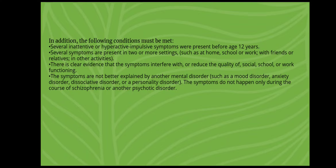In addition, the following conditions must also be met: Several inattentive or hyperactive-impulsive symptoms were present before the age of 12 years. Several symptoms are present in two or more settings, such as home, school, or work, with friends or relatives, or in other activities. There is clear evidence that the symptoms interfere with or reduce the quality of social, school, or work functioning. The symptoms are not better explained by another mental disorder such as mood disorder, anxiety disorder, dissociative disorder, or a personality disorder. The symptoms do not happen only during the course of schizophrenia or another psychotic disorder.